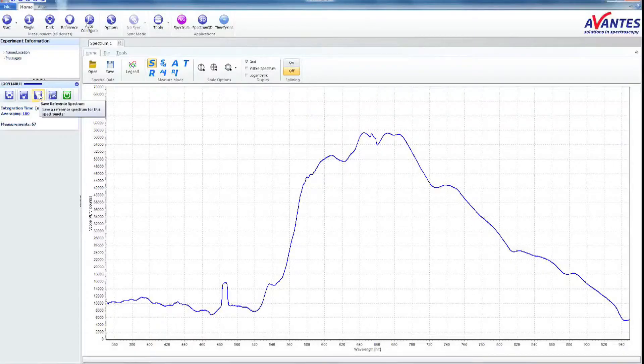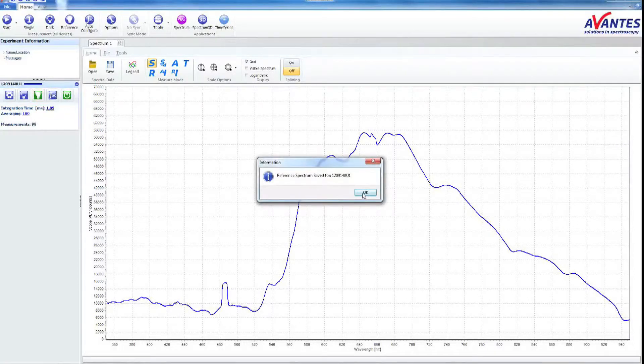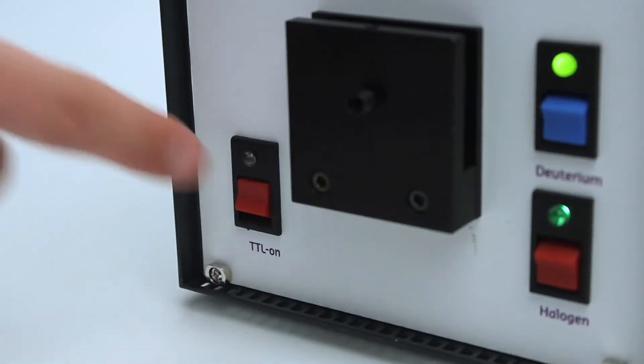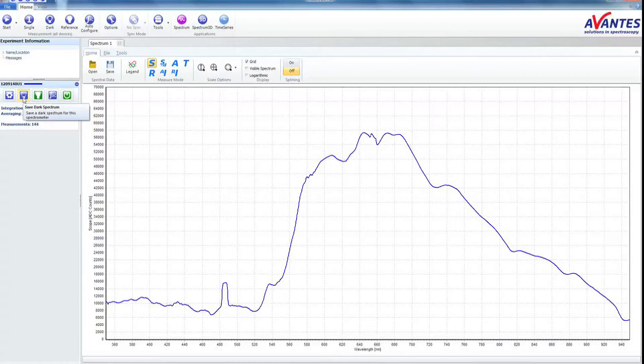Take a white reference and close the shutter. Wait until the spectrum normalizes. Now take a dark reference.